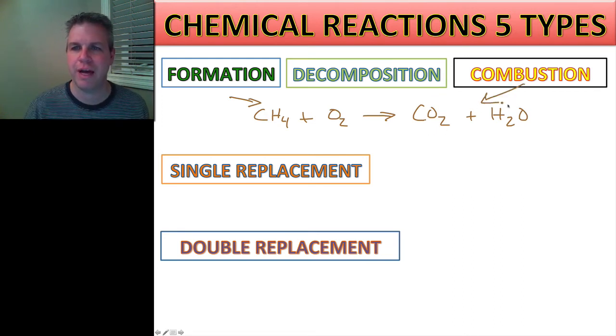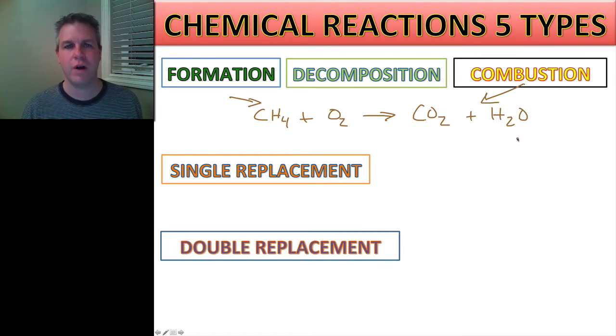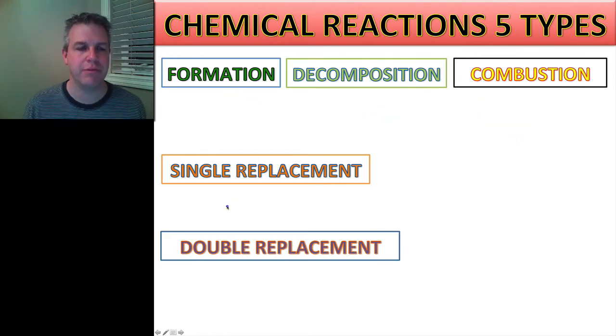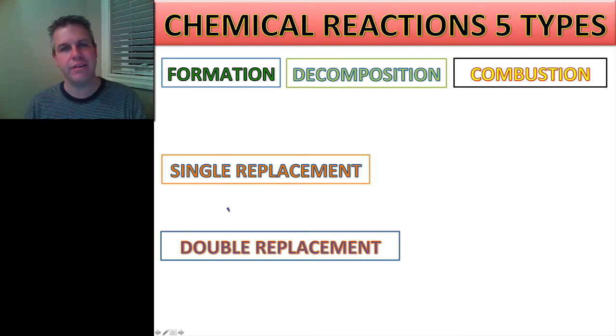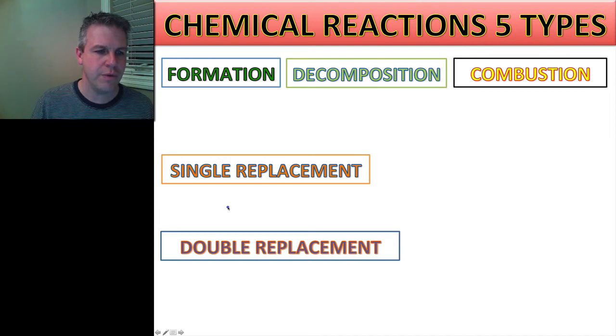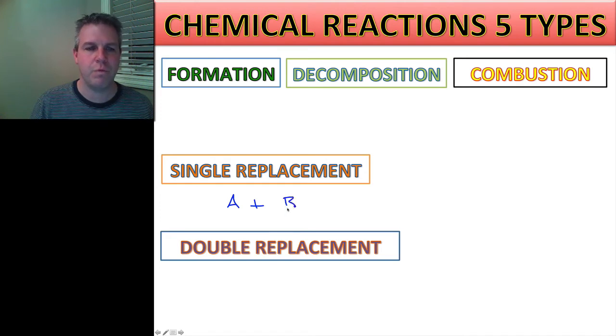So you always have to remember that combustion reaction always yields carbon dioxide and water. Moving on to single replacement. Now what we have to pay attention to here are the ions that are in the elements that are in the reactants, because that's going to dictate what we get as our product. So we have a single element that is going to combine with a compound. Let's just say that we have A plus BC. That is going to yield something.